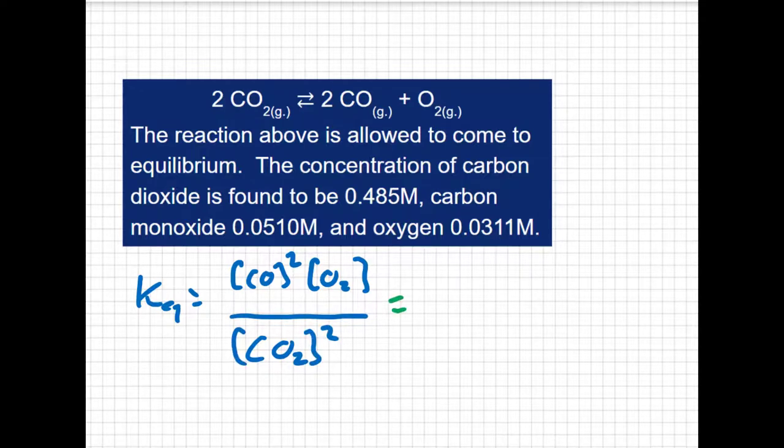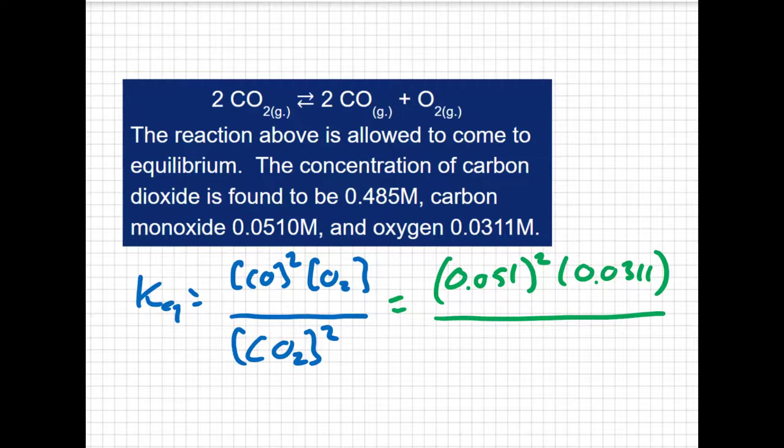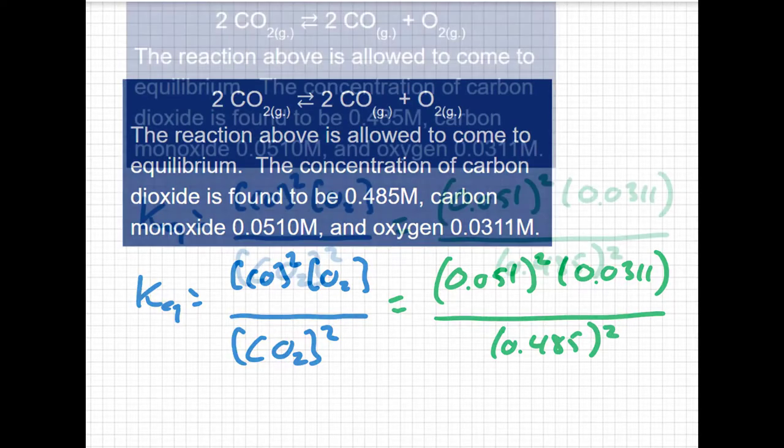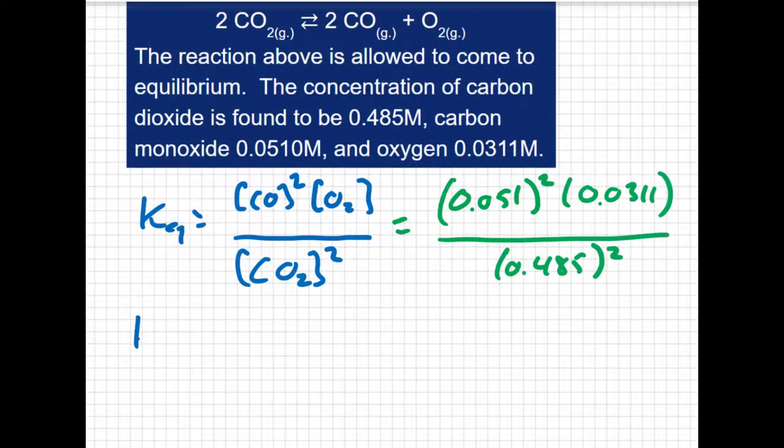We have our equilibrium concentrations. Carbon monoxide is 0.051, and I square that. Oxygen is 0.0311. I divide by carbon dioxide, which is 0.485, and I square that. When I solve for Keq,